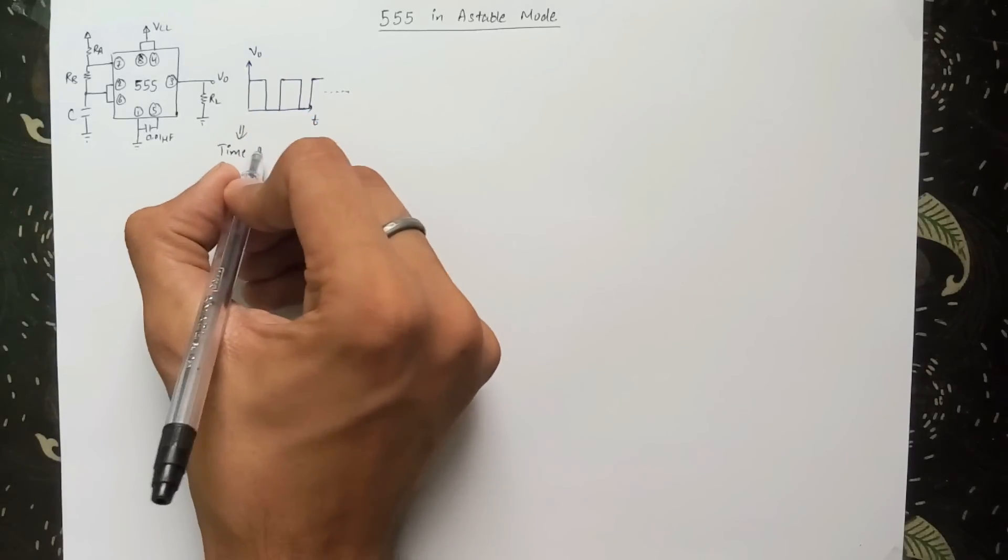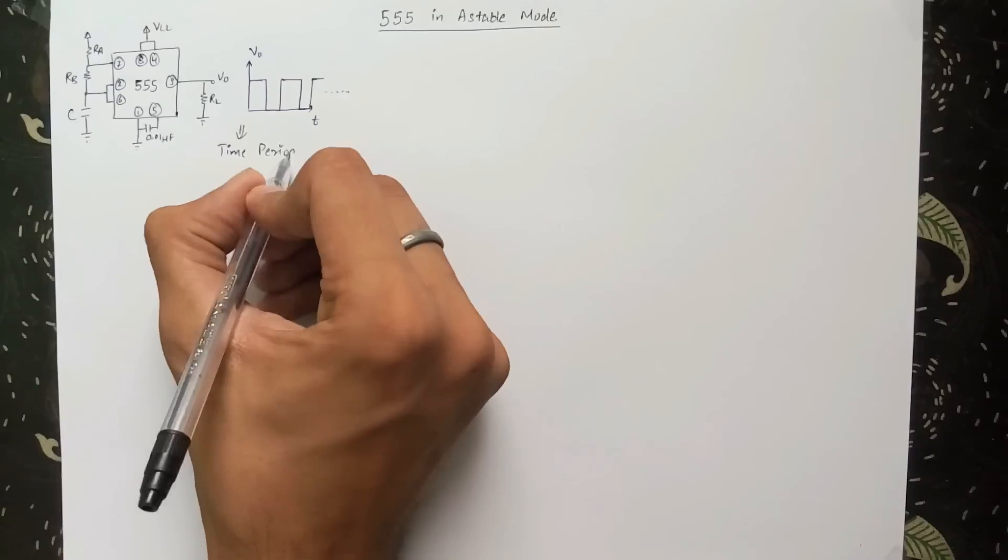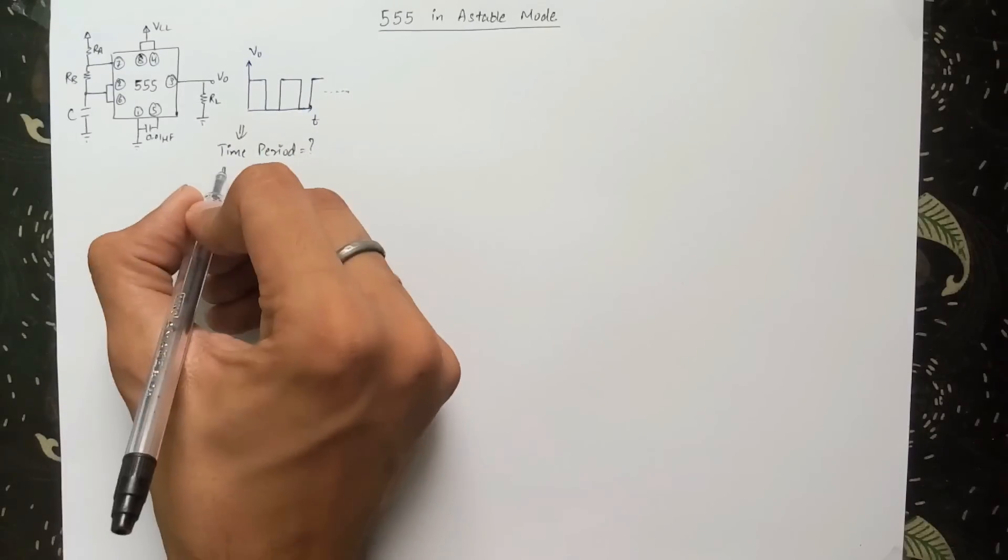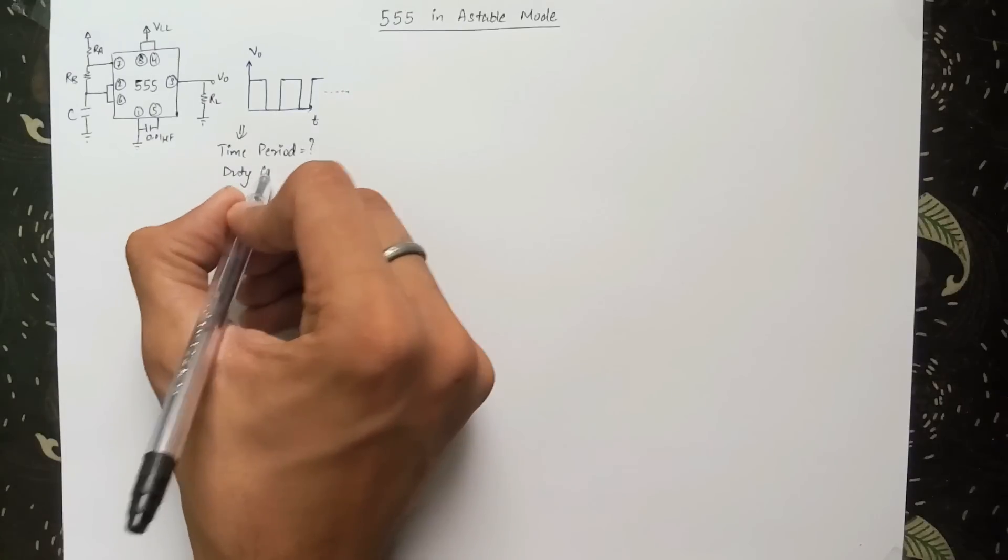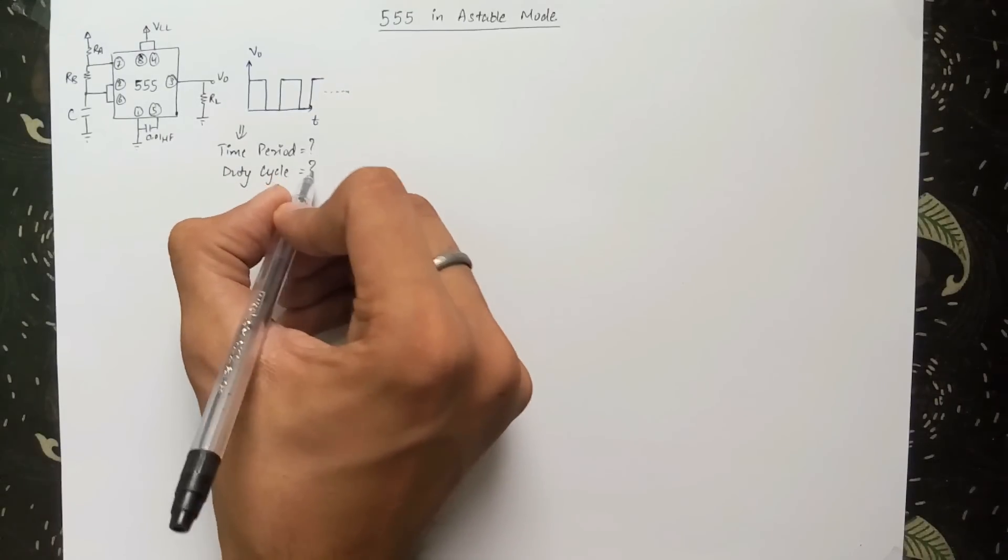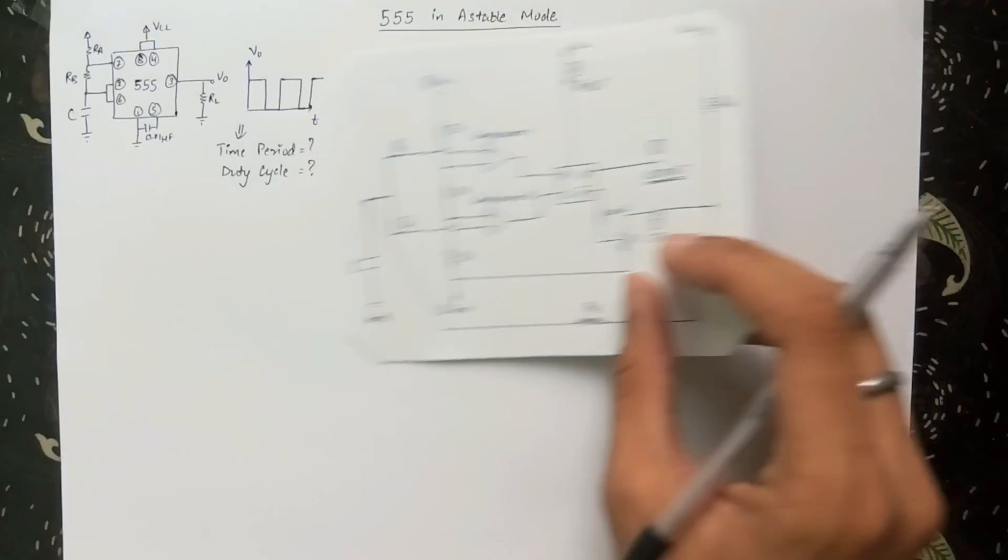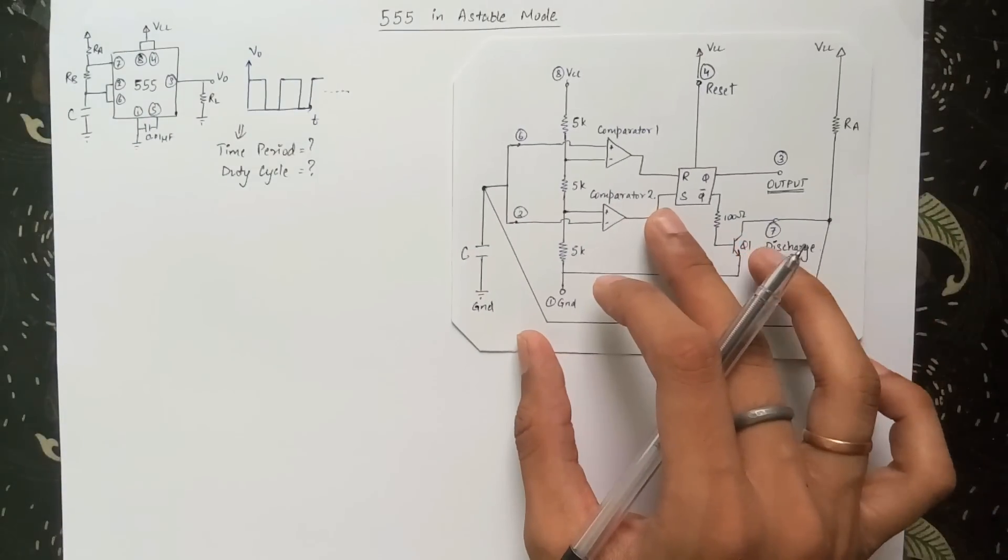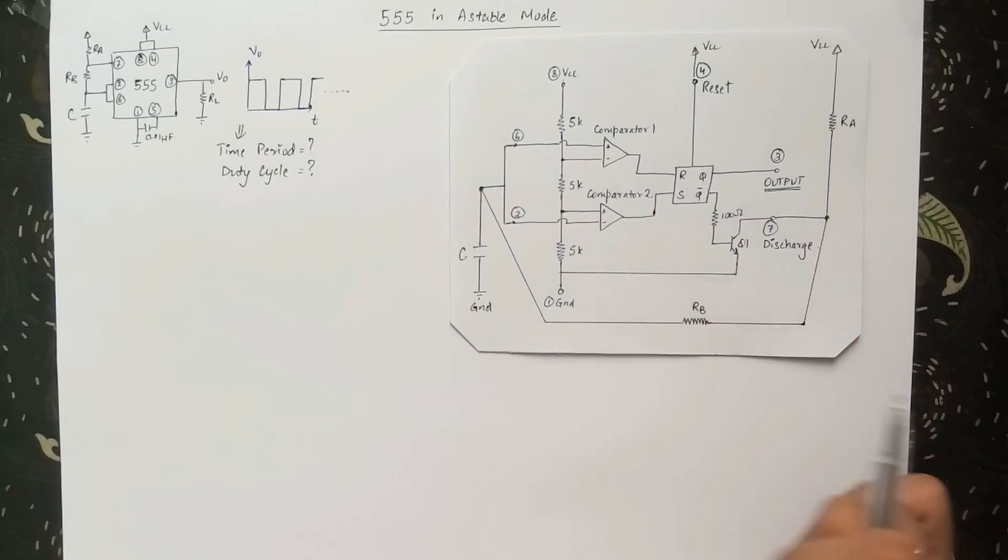To understand the working of the internal circuit of the 555 IC, do look at part 1 of this tutorial series. Here we will be discussing the working of this circuit and how to find the time period and duty cycle of our astable multivibrator. I have redrawn the same circuit with its internal circuit shown for easy understanding.